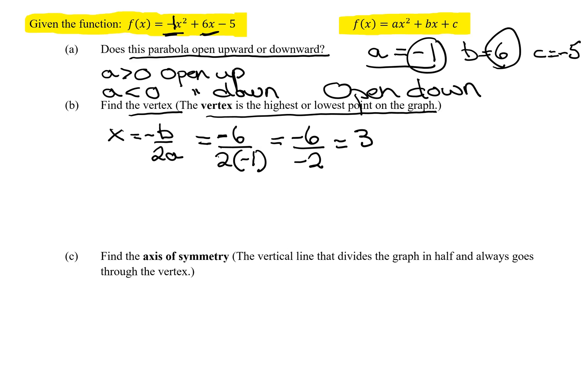We don't need a formula for the y value. All you have to do is plug the x value that we just found into our function up here. So it's negative, and I'm going to leave the 1 there, times x squared plus 6 times x minus 5.